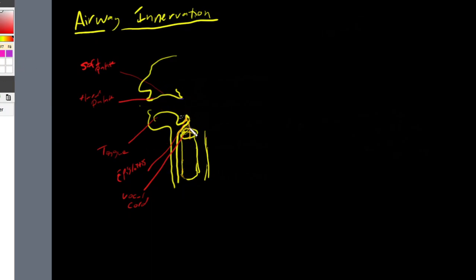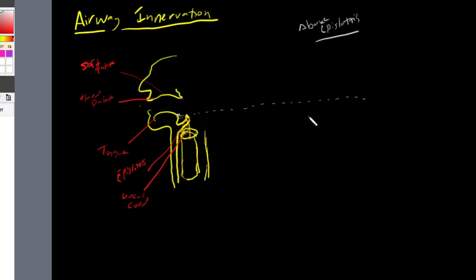The way I like to think about this is to draw a border at our epiglottis. Our epiglottis is this hook-like structure right over here. I divide at the epiglottis so that everything above it is more superior and everything below it is more inferior. This helps us break down the different cranial nerves that supply sensation and motor function to both of these aspects.